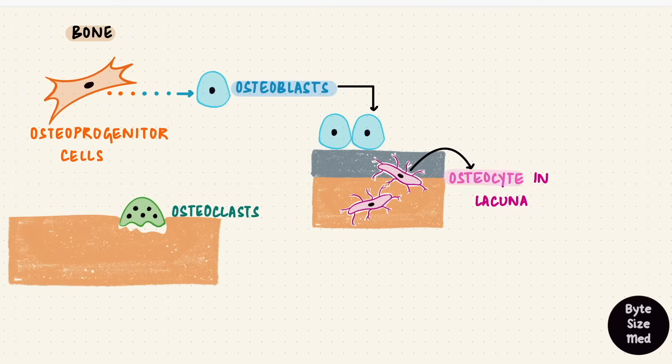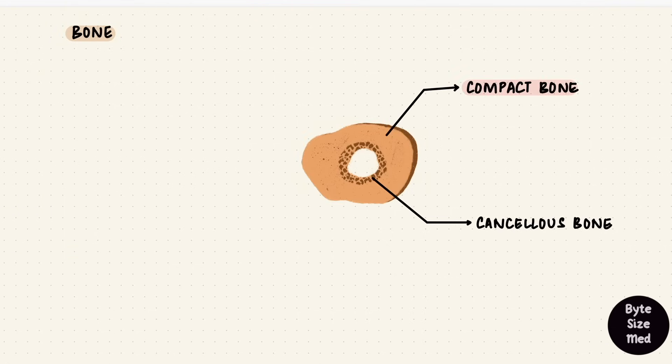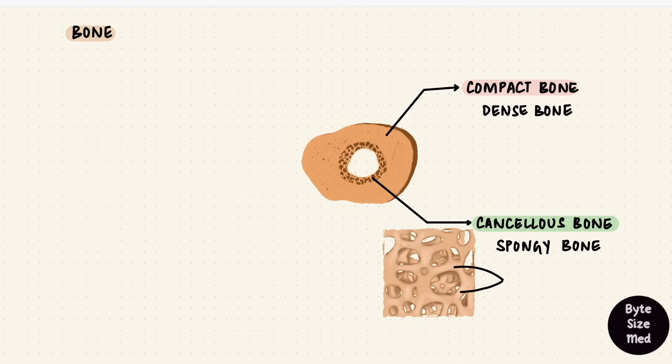Osteoblasts form bone, osteocytes maintain it, and osteoclasts destroy it. This bone tissue is distributed in compact and cancellous bone. Compact bone is dense. Cancellous bone is spongy, with rods and plates forming trabeculae. Spaces between the trabeculae are filled with bone marrow.